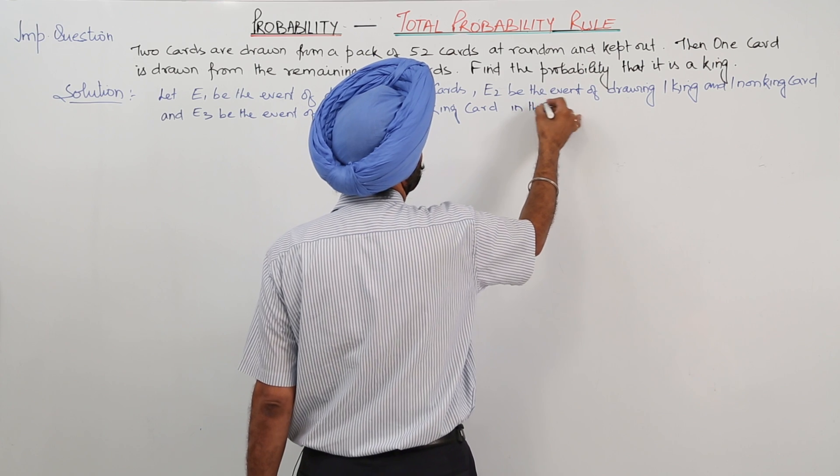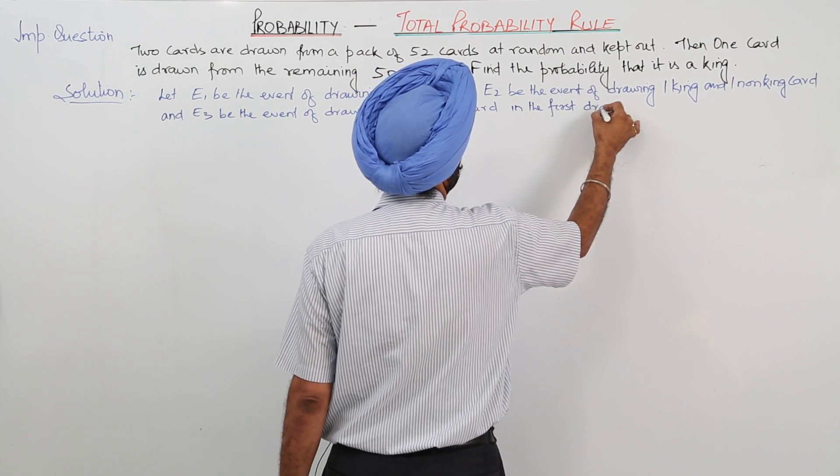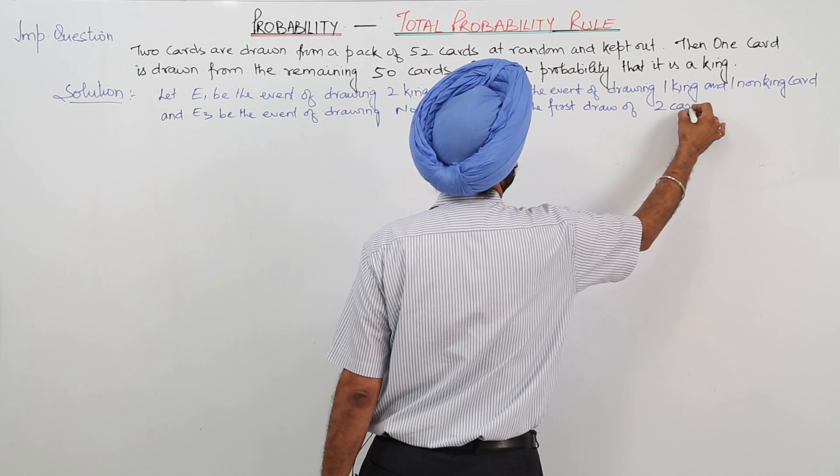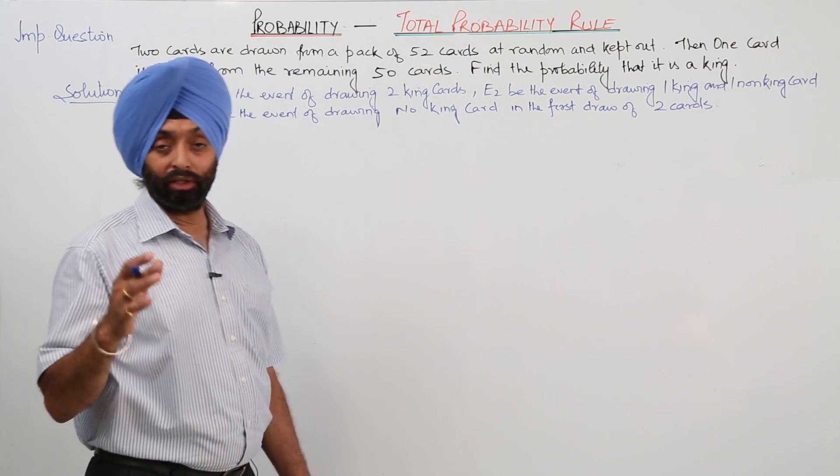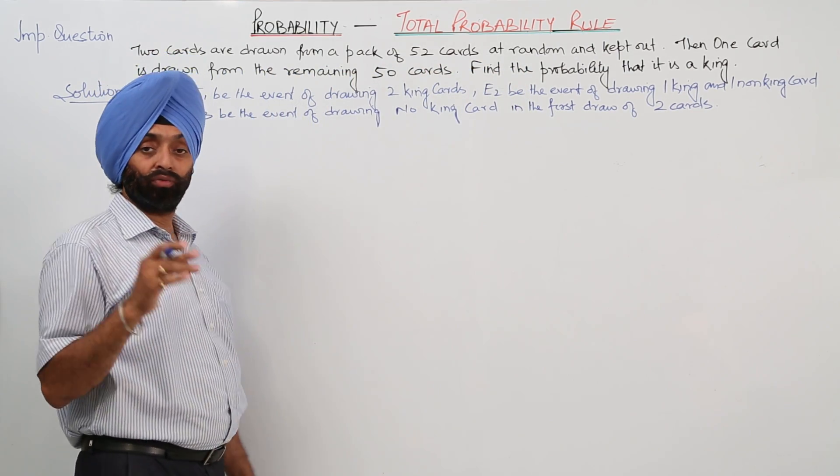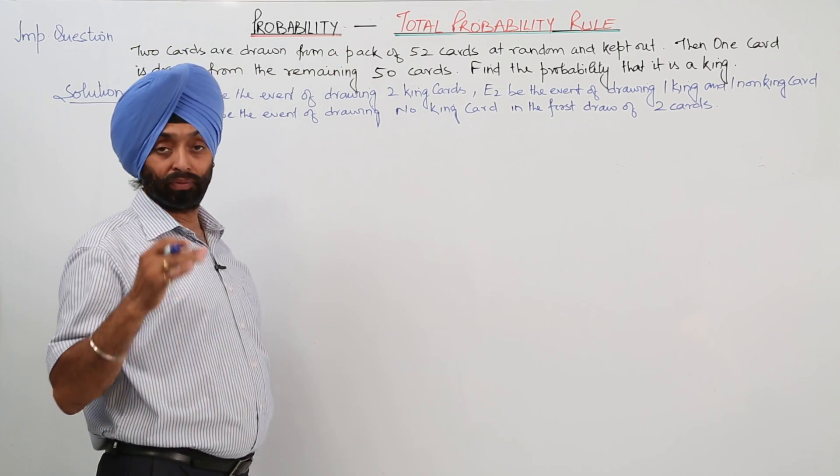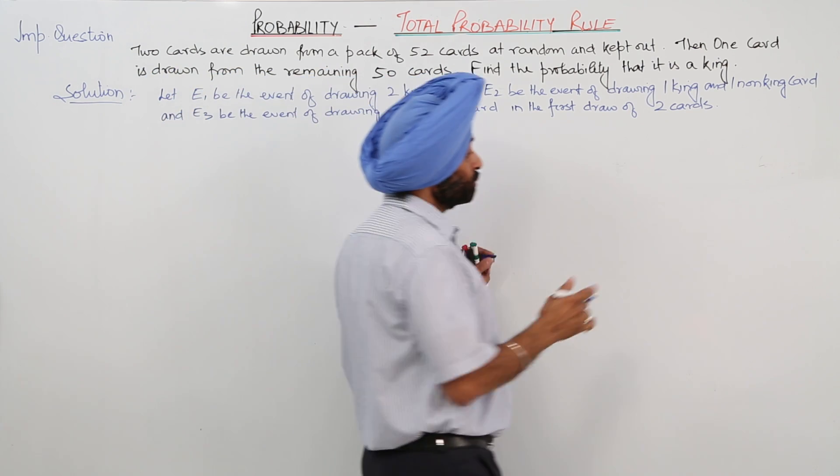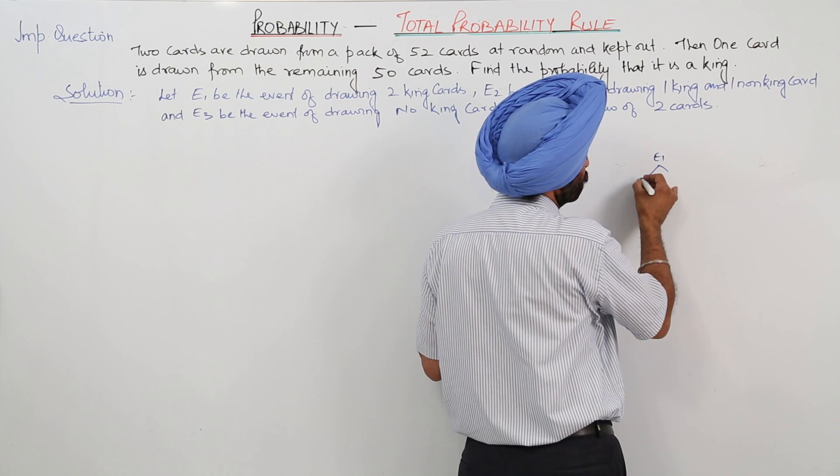In the first draw of 2 cards. Now what I have written, it means E1, E2, E3 be the event of drawing 2 cards. It is written 2 cards are drawn from a pack of 52 cards and keep it on one side. Now when 2 cards, now what is the first chance? It can be that both are king cards.